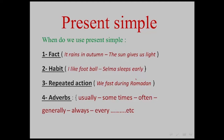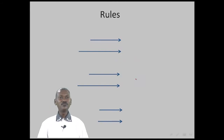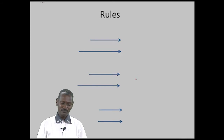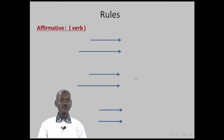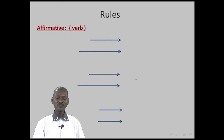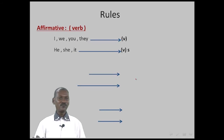Those adverbs include: usually, sometimes, often, generally, always, every, and so on. Now let us go to the rules of Present Simple. We have three different rules. First, the affirmative rule — we use it when we have an ordinary verb in brackets. The rule is: I, we, you, they + verb; he, she, it + verb + S.